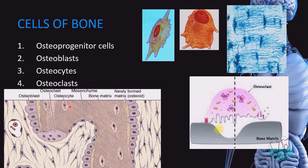Osteocytes located within the lacuna exhibit cytoplasmic processes housed in canaliculi — this will be discussed in detail in the next part under histology of bone. Osteoclasts are multinucleated cells that originate from granulocyte-macrophage progenitors, meaning the cells that produce granulocytes and macrophages also produce osteoclasts. They primarily have a resorptive function.